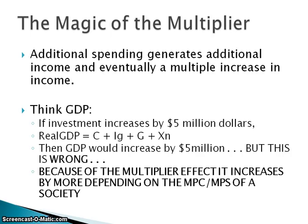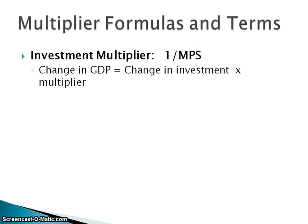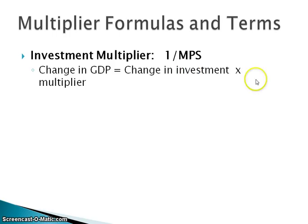We need to know how the multiplier impacts the amount of money created. There are different multipliers: the investment multiplier, the government spending multiplier, and the tax multiplier. The investment multiplier is 1 over MPS — you'll also see it as 1 divided by (1 minus MPC). To find the change in GDP, you take the change in investment or initial spending and multiply it by the multiplier, which is 1 divided by MPS.